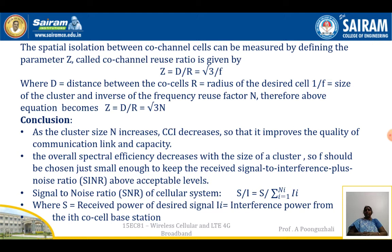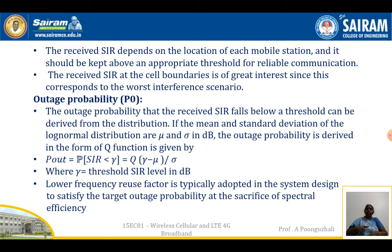The frequency reuse factor F should be chosen such that it is small enough to keep the signal-to-interference-plus-noise ratio above acceptable levels. The SIR of the cellular system is given as S̄/I = summation from i=1 to M_i of L·I_i, where I_i is the interference power from the i-th co-cell base station. The received SIR depends on the location of each mobile station and must be kept above the threshold level for reliable communication.